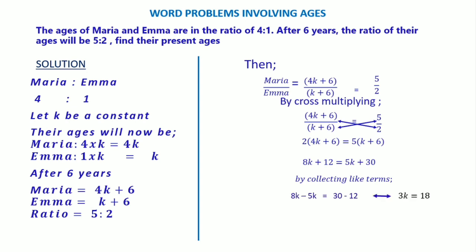8k minus 5k gives 3k, and 30 minus 12 gives 18. After that, divide both sides by 3. 18 divided by 3 is 6, so the value of k is 6.